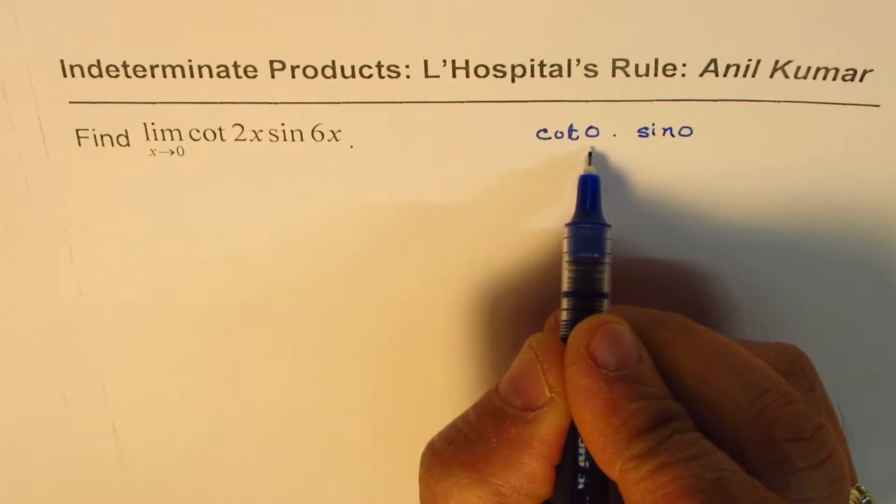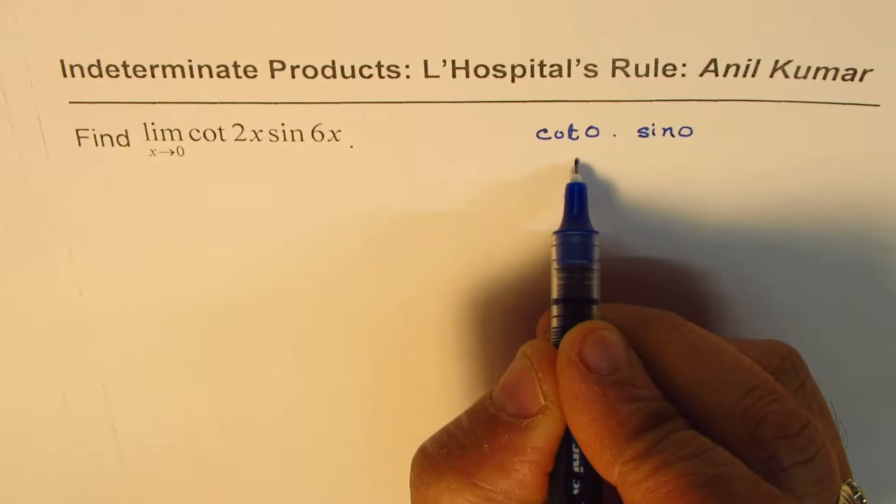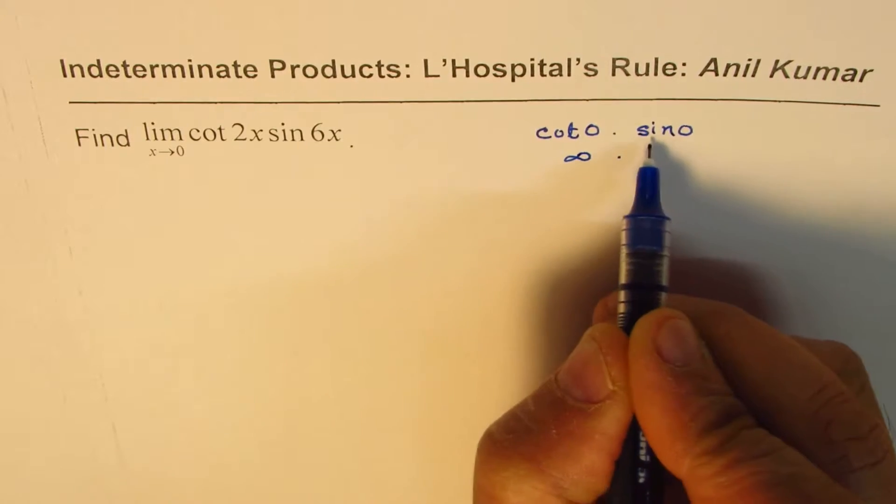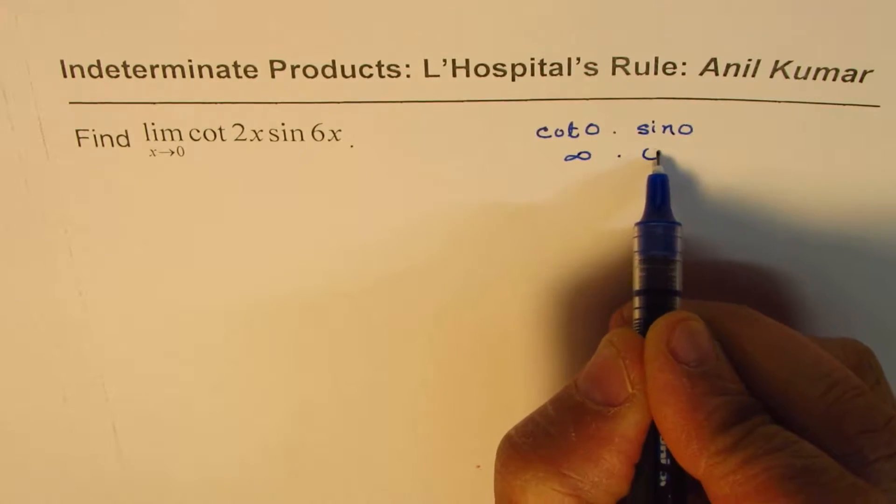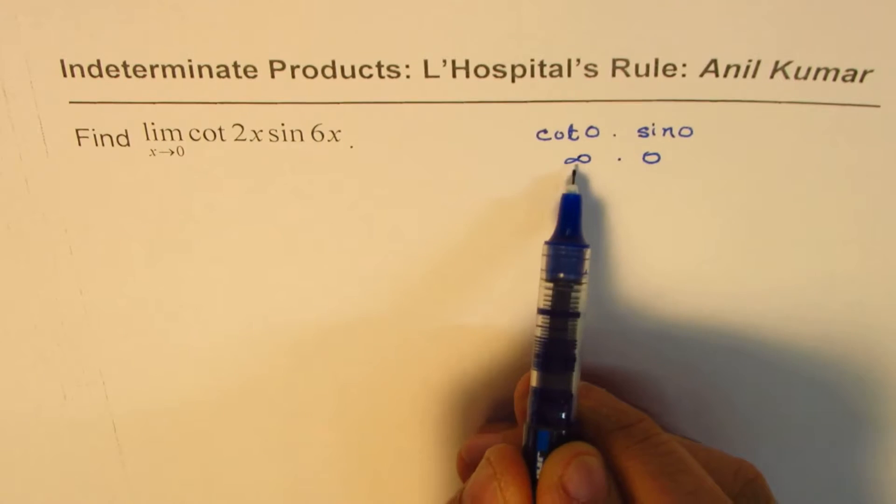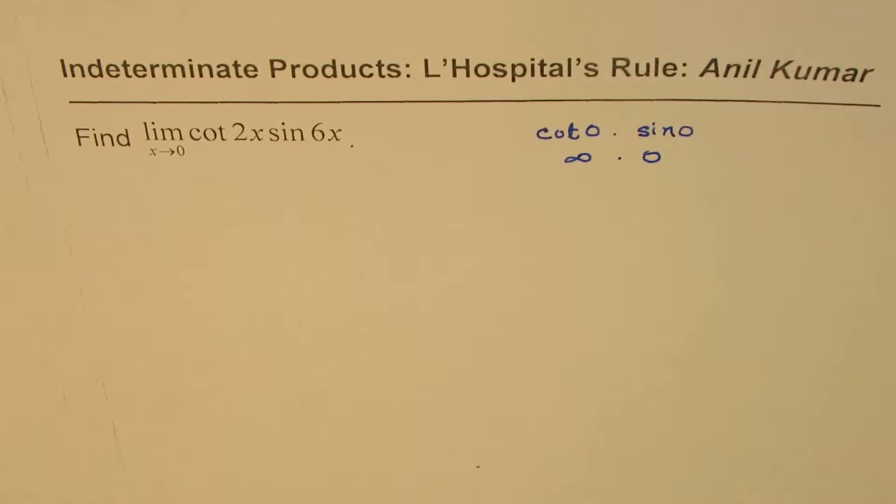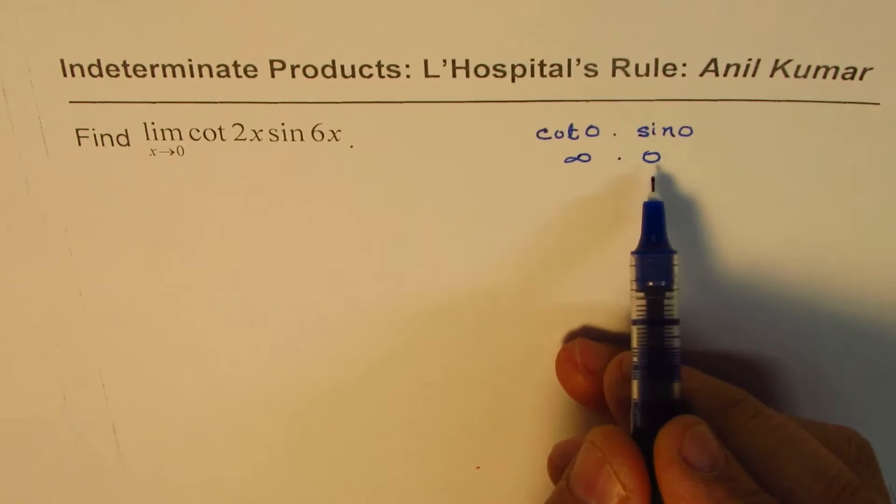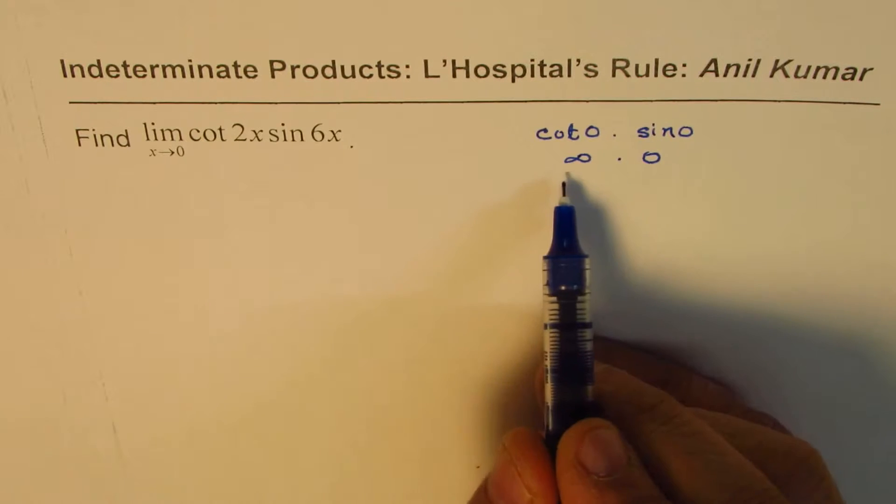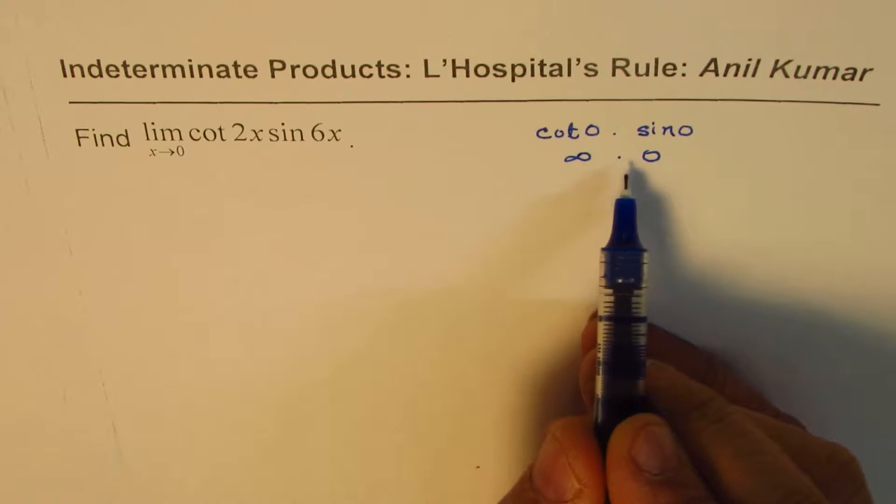Now cot of 0 is infinity. That is infinity, and sine of 0 is 0. So we get indeterminate product. So we are multiplying infinity by 0. We are not very sure what the result should be. That's the infinity times 0.